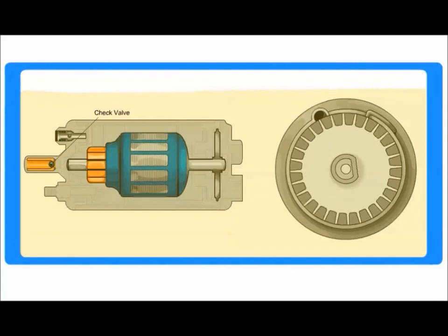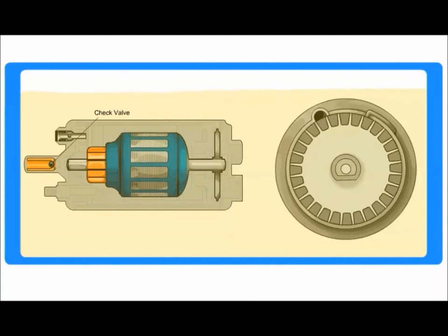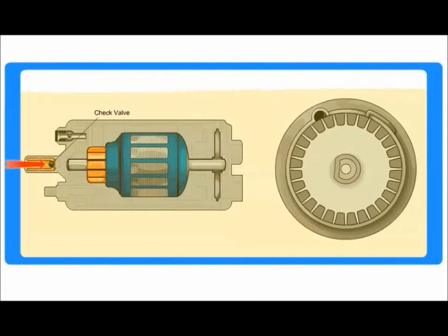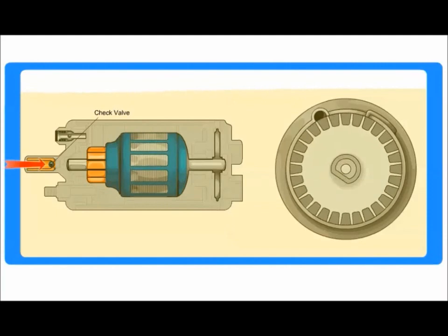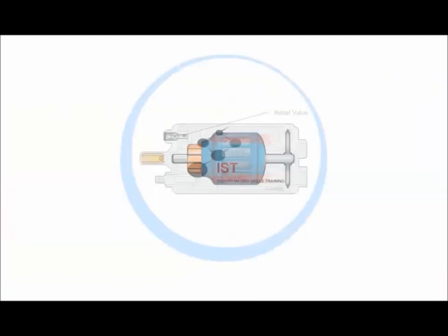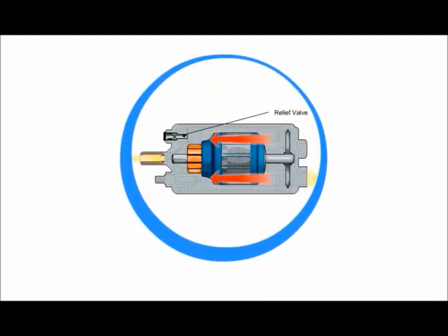The purpose of the check valve is to prevent pressure in the fuel rail from flowing back into the tank when the fuel pump is off. That way, the fuel system will have sufficient pressure when the vehicle is started. Pressure relief valve will open and discharge fuel back into the tank should pressure become excessive.